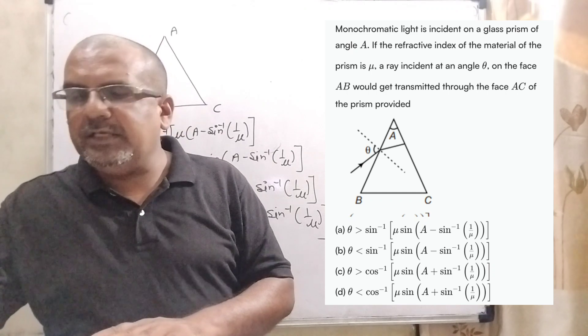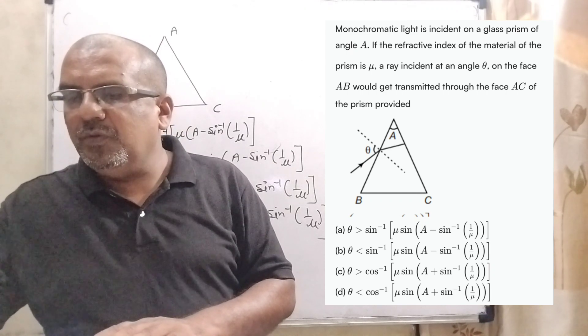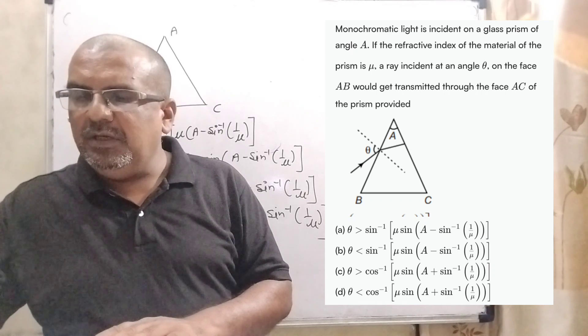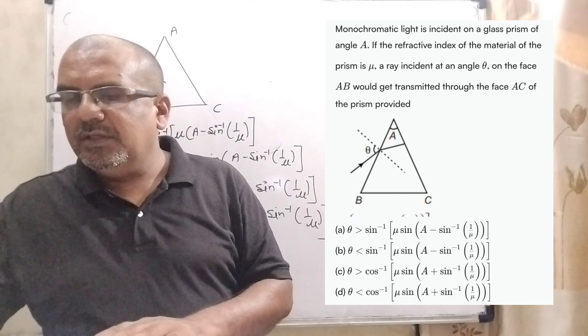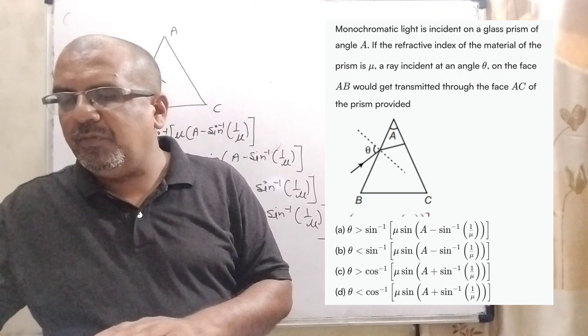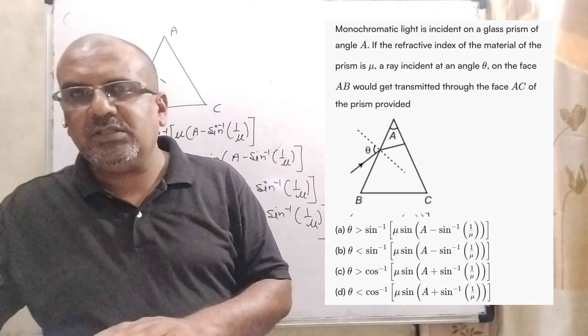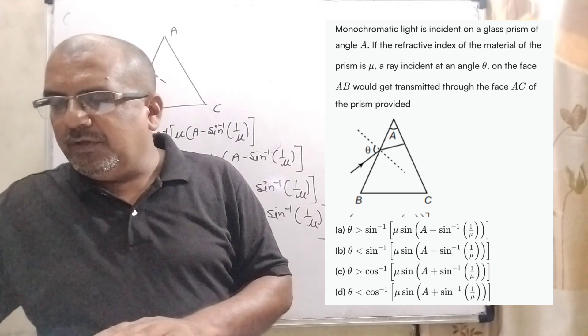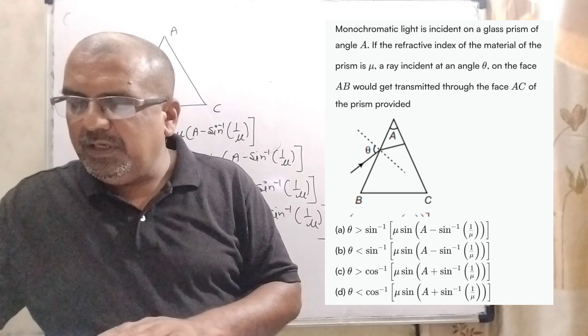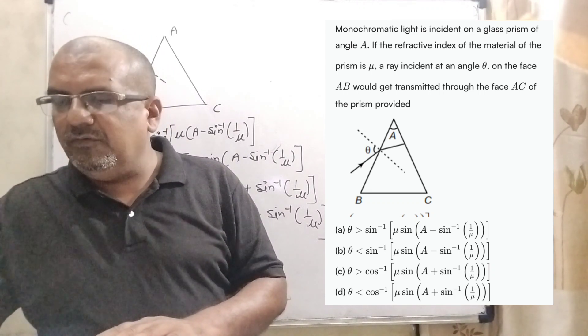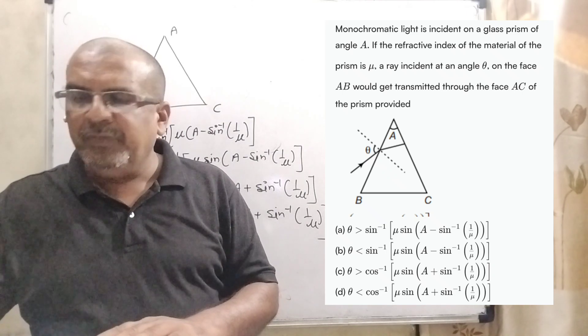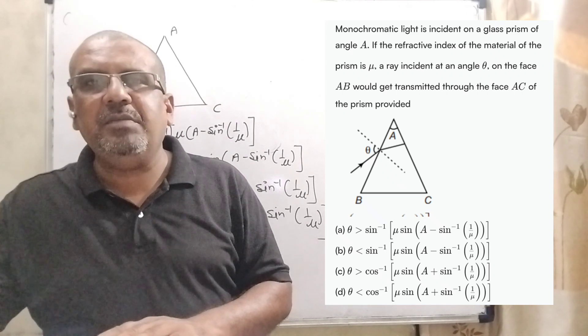Here we have given four options. Option a: theta is less than sine inverse mu sine into bracket A minus sine inverse 1 by mu. Option b: theta is less than sine inverse mu sine into bracket A minus sine inverse 1 by mu. Option c: theta is greater than cos inverse into bracket mu sine into bracket A plus sine inverse 1 by mu. Option d: theta is less than cos inverse mu sine into bracket A plus sine inverse into bracket 1 by mu. And this question is asked JEE Mains 2015.